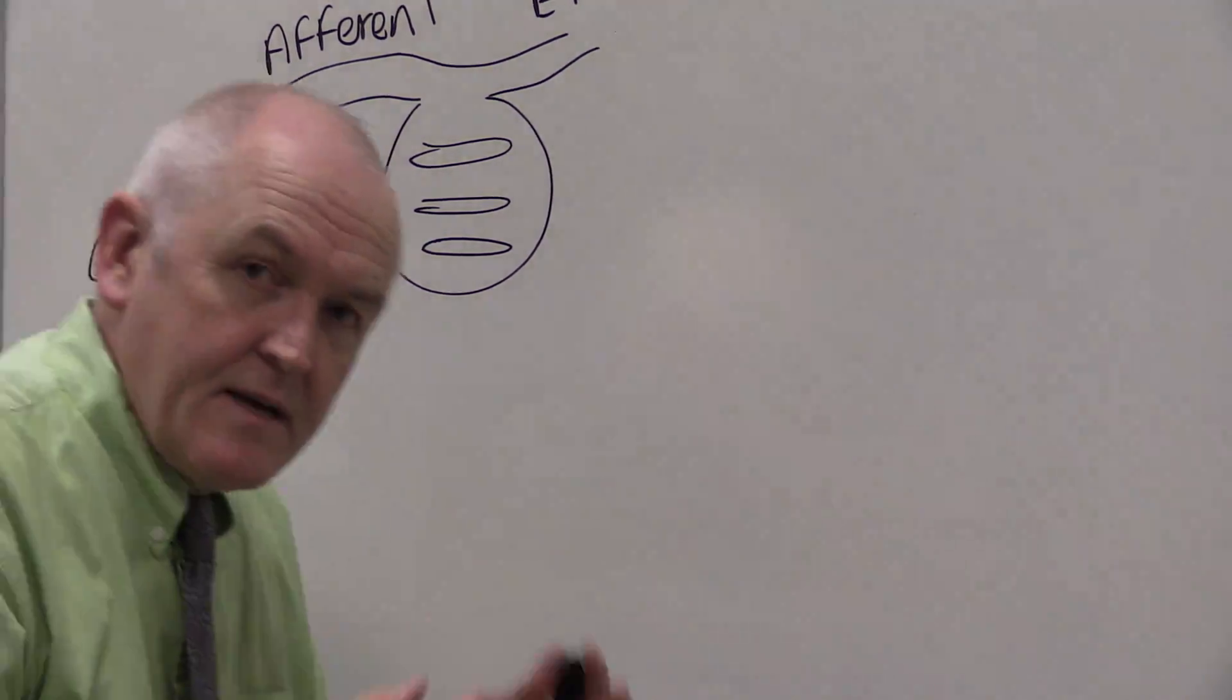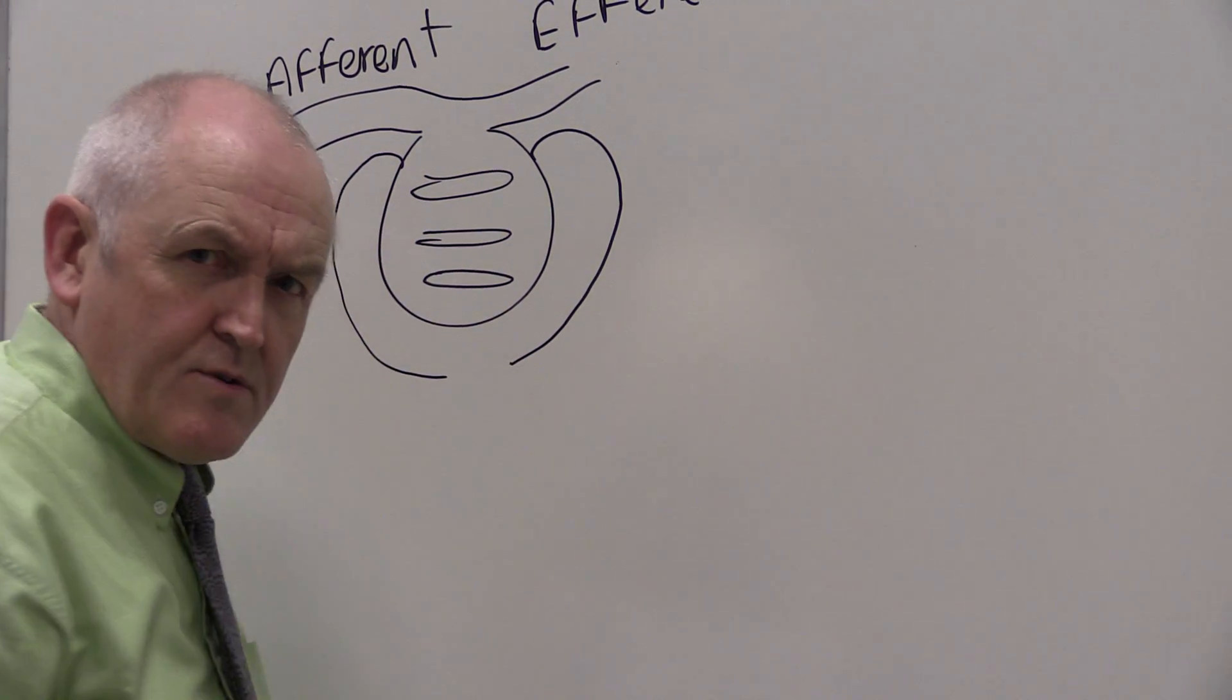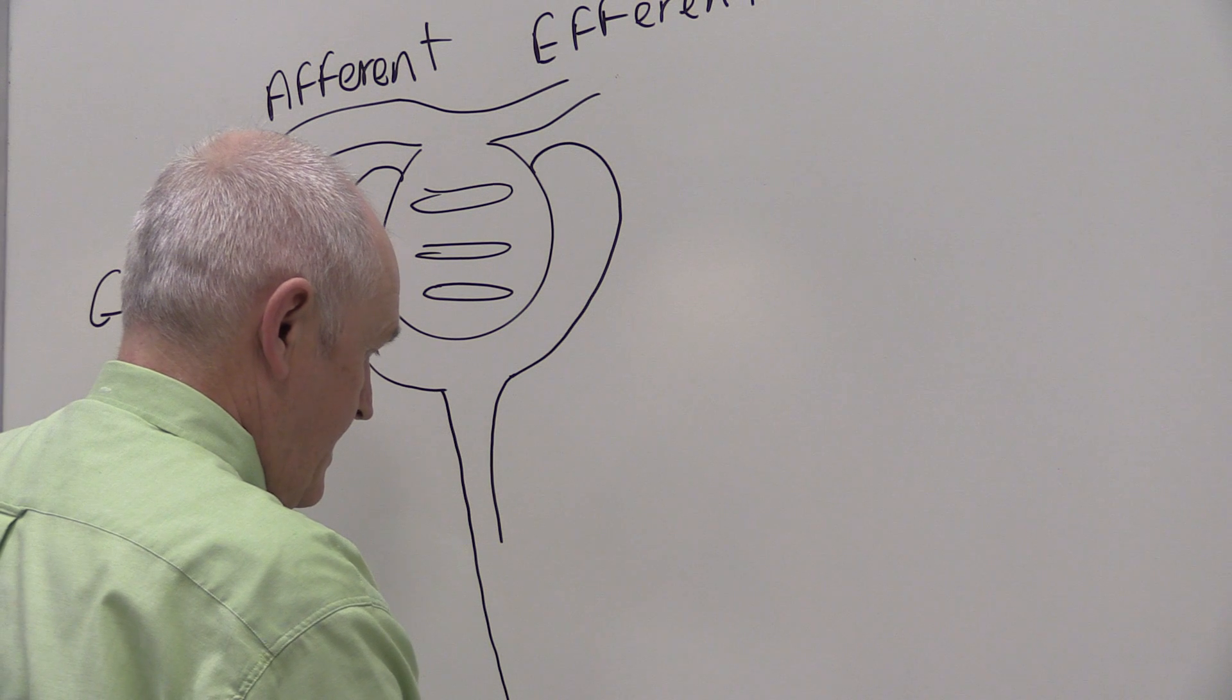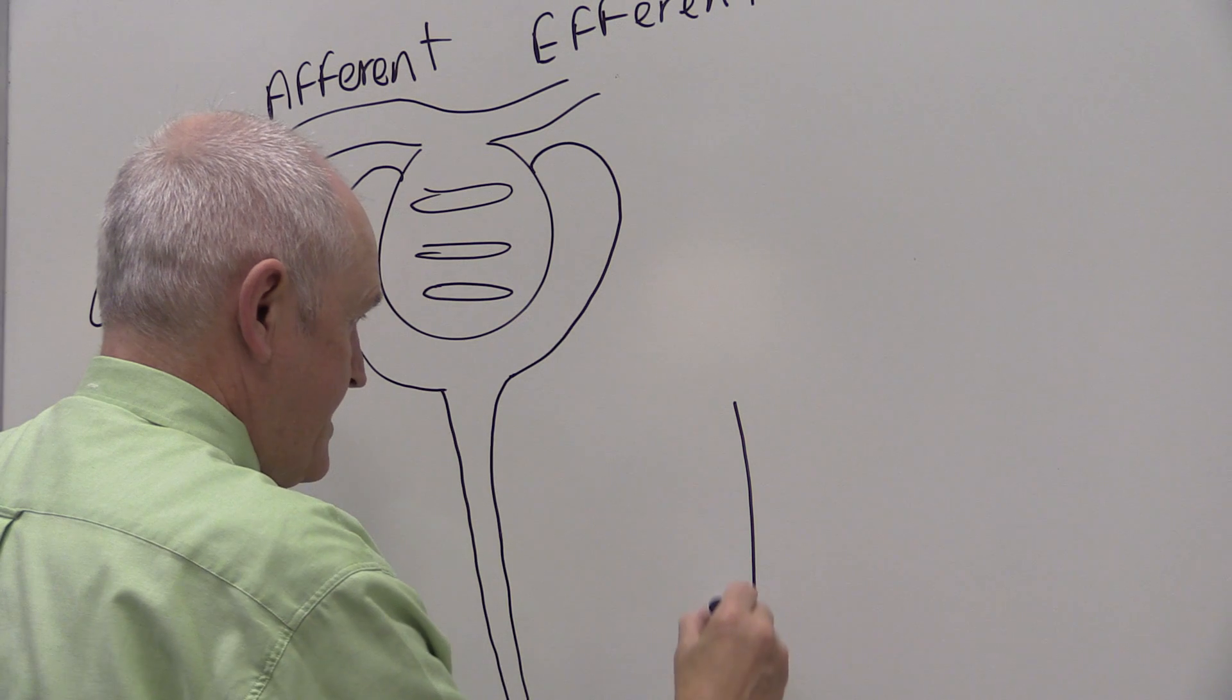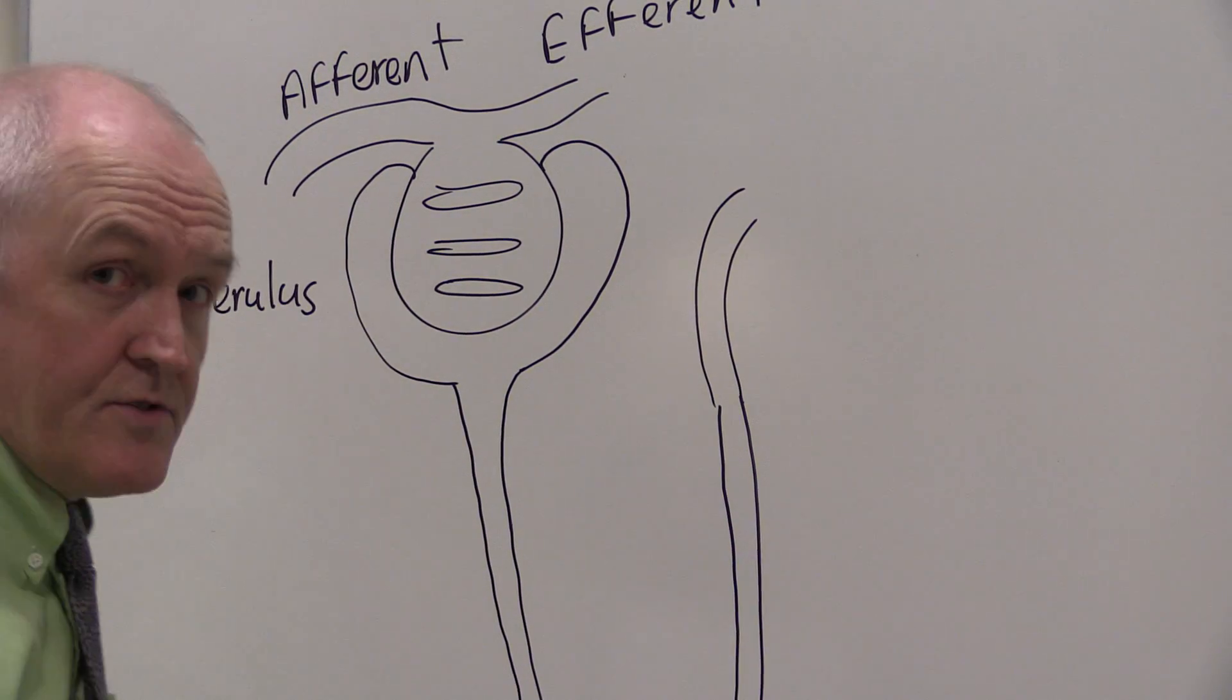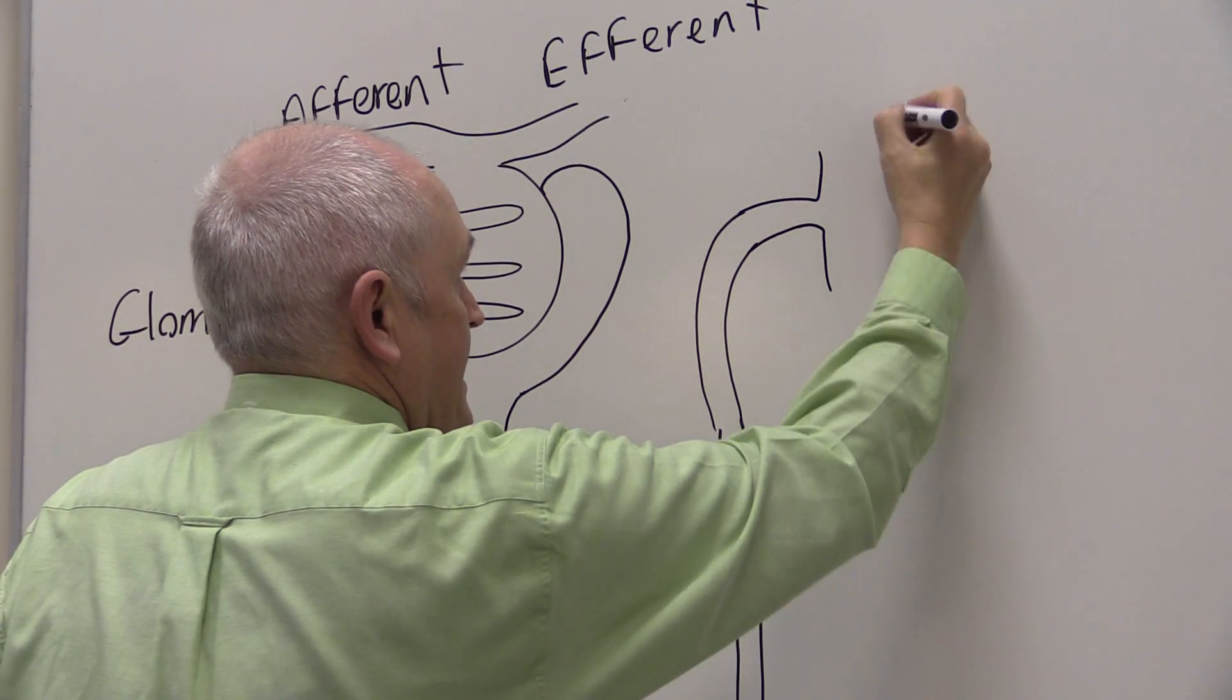And round about that we have the Bowman's capsule. I'm just going to draw a very simplified nephron. This would be the proximal convoluted tubule, the loop of Henle, just a very simplified one, the ascending tubule, the second convoluted tubule. As we know, the second convoluted tubule area of the nephron visits the afferent arteriole, but in this simplified diagram, we'll just connect it up to the collecting duct.